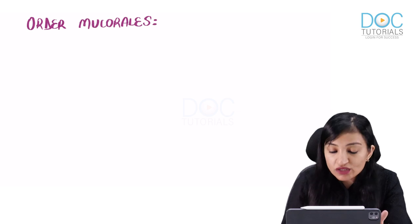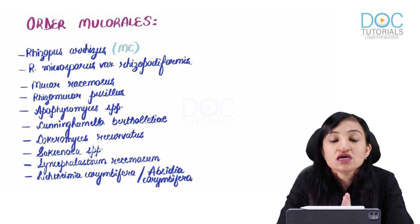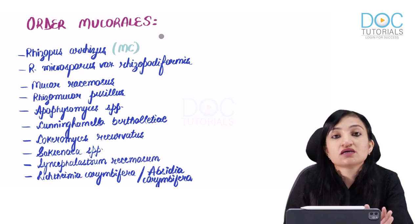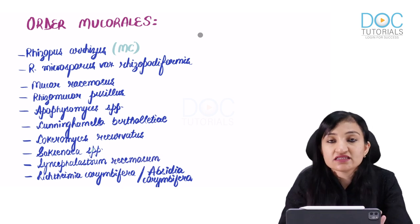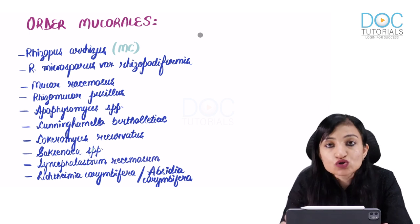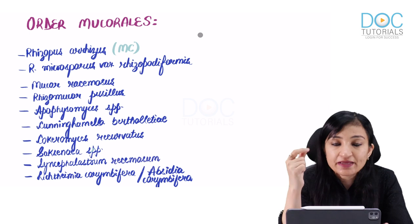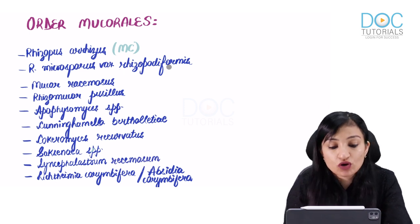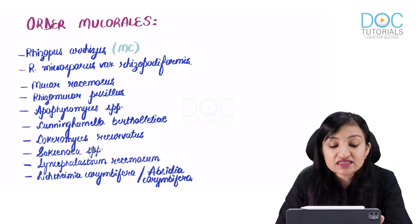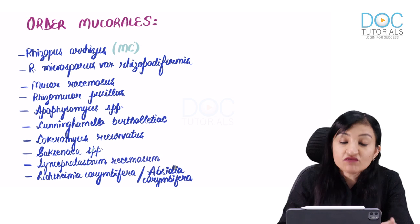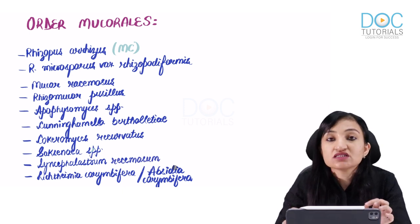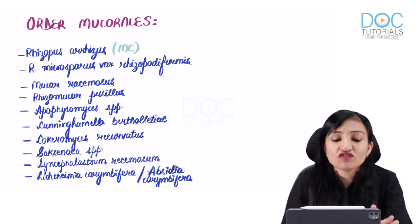Order Mucorales contains many important organisms. Most important is Rhizopus arrhizus — the most commonly encountered fungus in clinical specimens from cases of Mucoromycosis. Rhizopus arrhizus is also known as Rhizopus oryzae (oryzae is the old name — O for oryzae, O for old). Other members include Rhizopus microsporus variety Rhizopodiformis, Mucor, Rhizomucor, Apophysomyces, Cunninghamella, Cokeromyces, Syncephalastrum, and Lichtheimia (also known as Absidia).